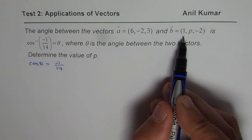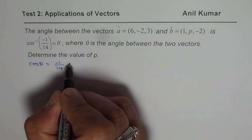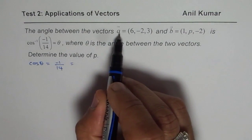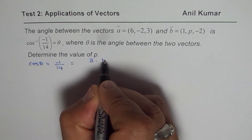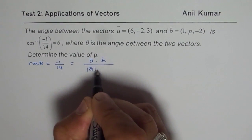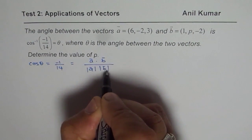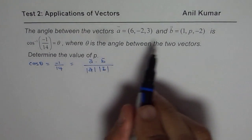Now we can use the dot product formula to relate them. We know cos theta is also equals to dot product of A and B divided by magnitude of A times magnitude of B. So that is how they are related. Solving this equation, we should get the value of p.